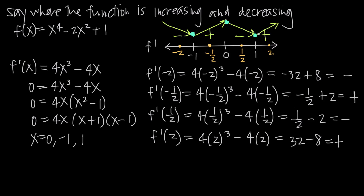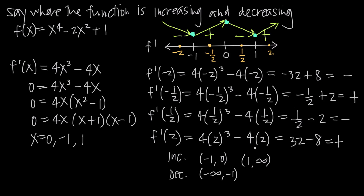This means x = -1 and x = 1 represent local minima, and x = 0 represents a local maximum. The function is increasing on the intervals (-1, 0) and (1, ∞), and decreasing on the intervals (-∞, -1) and (0, 1). That's how we summarize where the function is increasing and where it's decreasing.